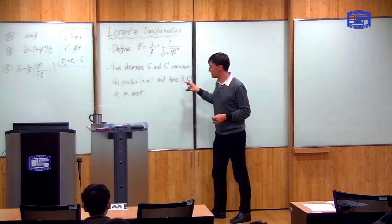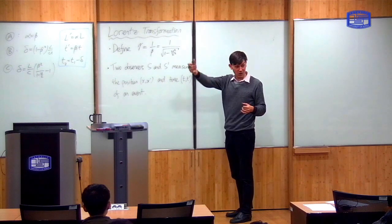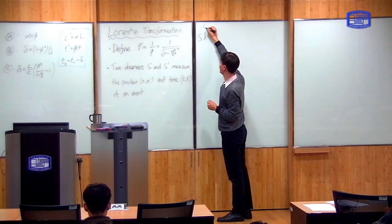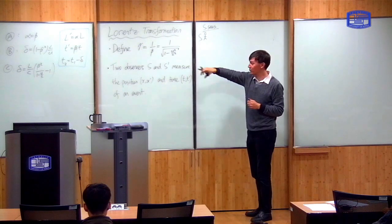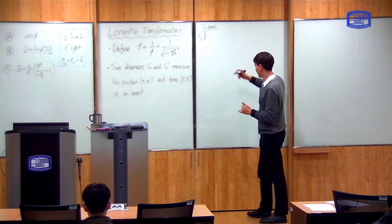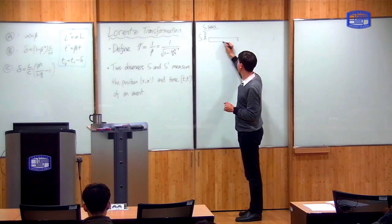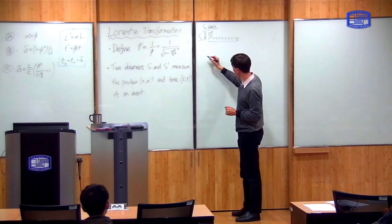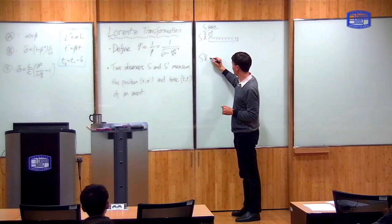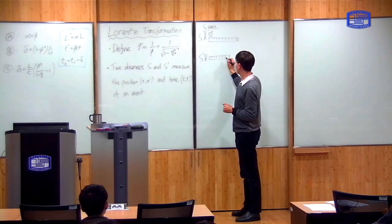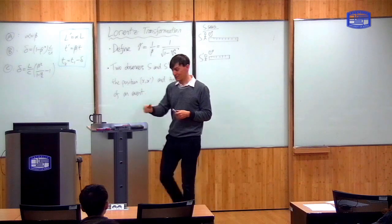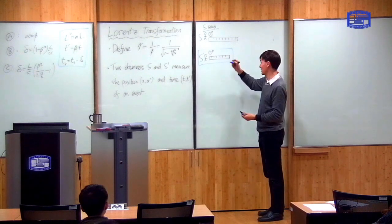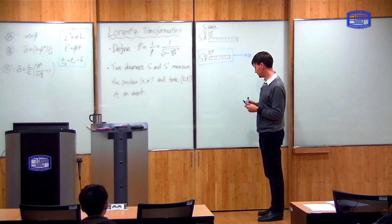So both observers need to measure position and time. In order to do this, they both need to have a ruler and a clock. The setup looks like this. I'll draw everything from the S perspective. Now that we've fixed alpha, beta, delta, one perspective is enough. So he has a ruler to measure length, and a clock to measure time. The S prime observer likewise has a ruler to measure length, and a clock to measure time. But according to the S observer, the S prime ruler is contracted, and his clock is time dilated, going slow.